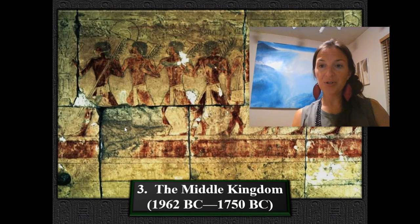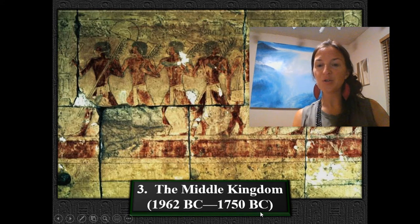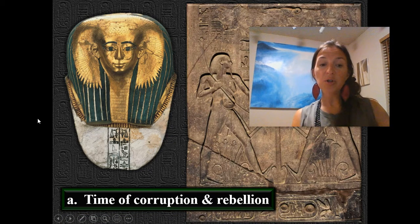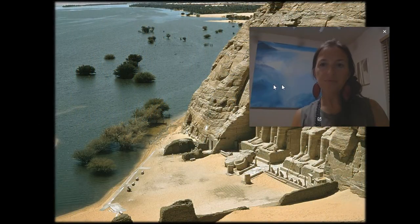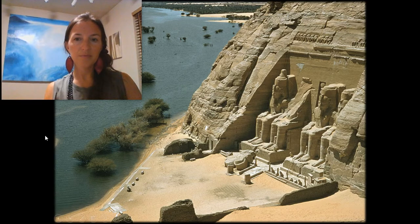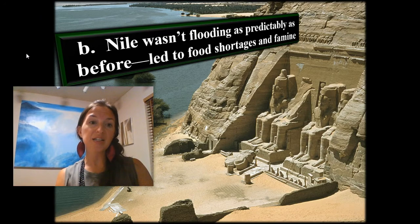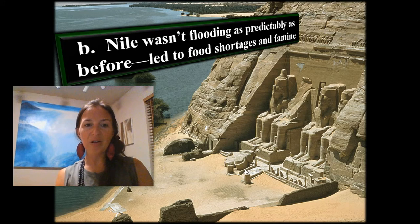Note number three: the Middle Kingdom occurred from 1962 BC to 1750 BC. Letter A: this was a time of corruption and rebellion. The Nile did not flood as predictably as before, so there were food shortages and famine — which you may recall from our history of Joseph, who predicted a time of flooding in Egypt.